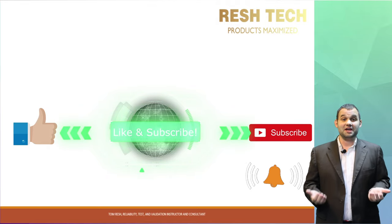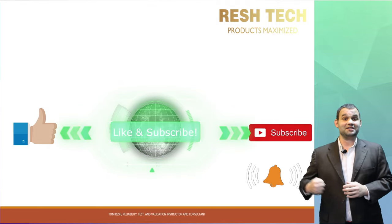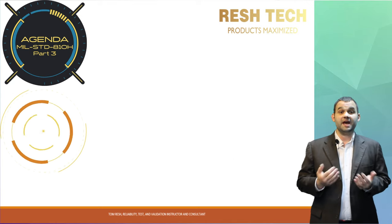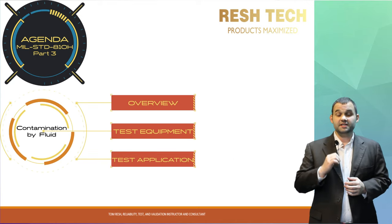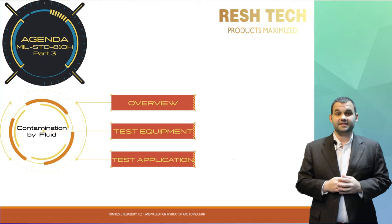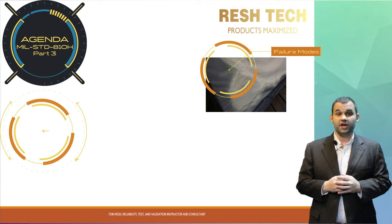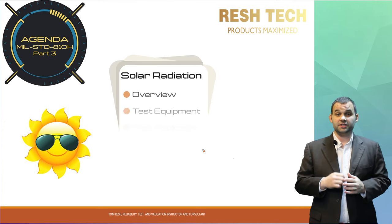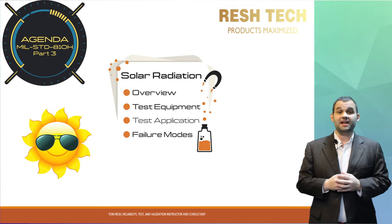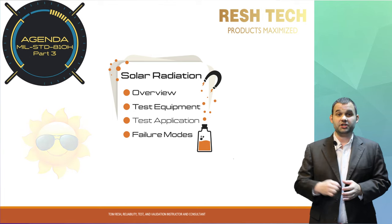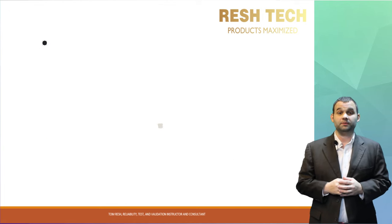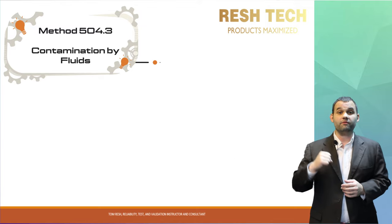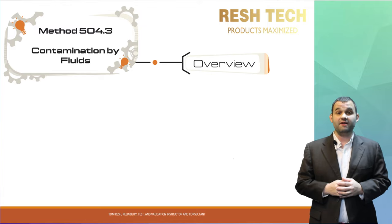Let's get started. In this video we'll cover contamination by fluid — overview, test equipment, test application, and failure modes to look out for — and solar radiation test overview, test equipment, testing application, and failure modes to look out for. Let's go ahead and start off with an overview of Method 504.3, contamination by fluid.